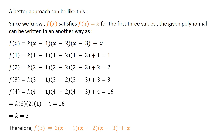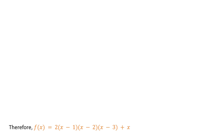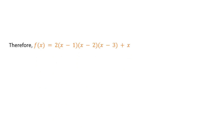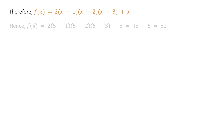Therefore, f of x equals 2 times x minus 1, times x minus 2, times x minus 3, plus x. Now taking the value of x as 5, we get f of 5 equals 53.